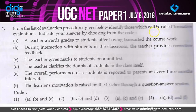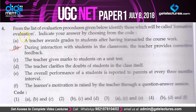Question 4: from the list of evaluation procedures, identify those which will be called formative evaluation. Option B — during interaction with students in the classroom, teacher provides corrective feedback — this is formative evaluation. Teacher clarifies doubts of students in class itself — this is formative evaluation. And learner's motivation is raised by the teacher through a question-answer session — this is also formative evaluation. So the correct option is B, D, and F, which is option 4.